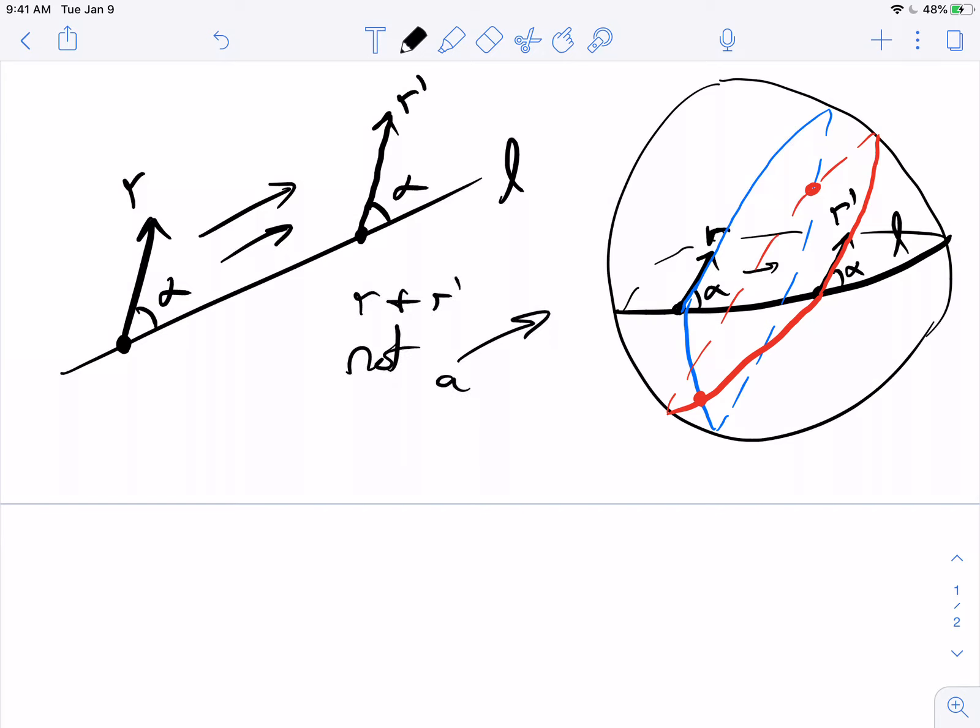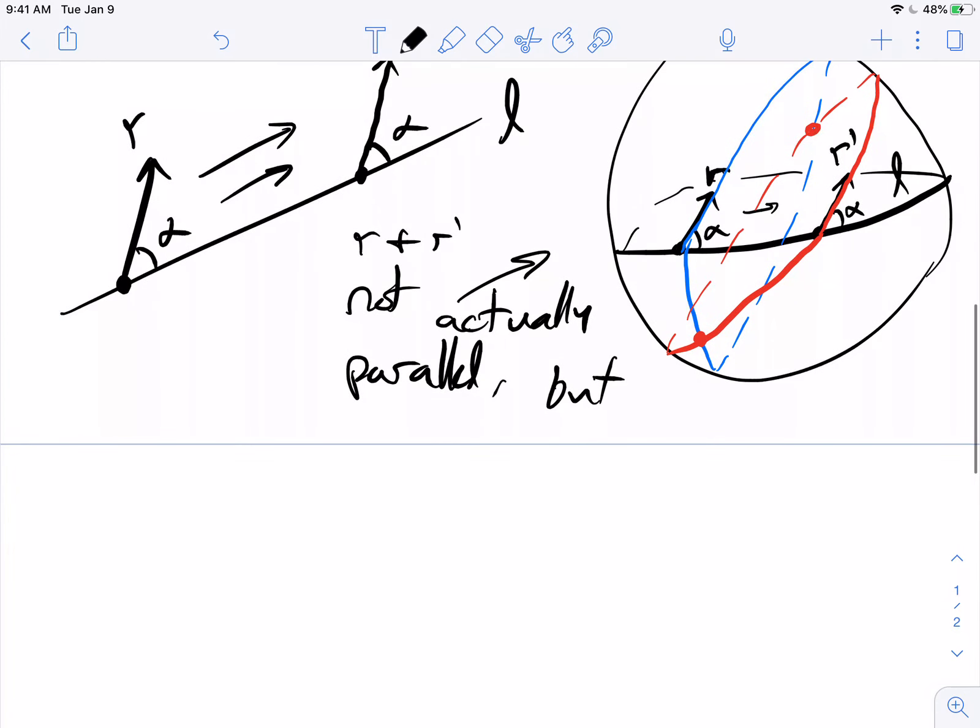R and R prime are not actually parallel. But we could sort of say they're locally parallel. If we stick close to the geodesic L, we should think of R and R prime as sort of parallel.